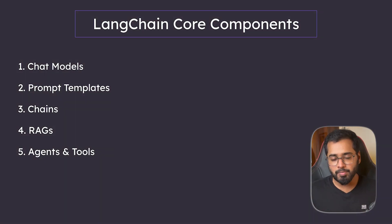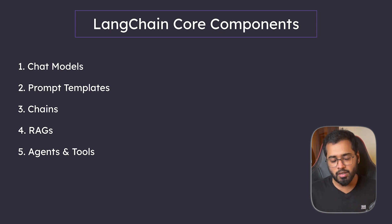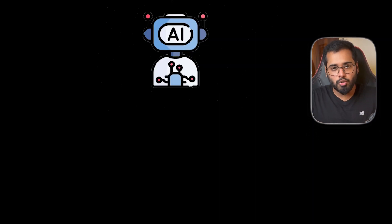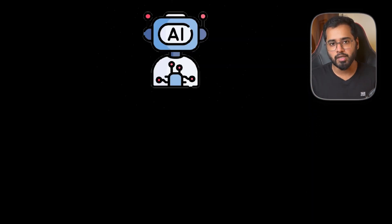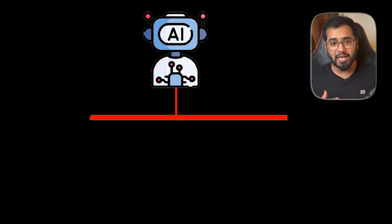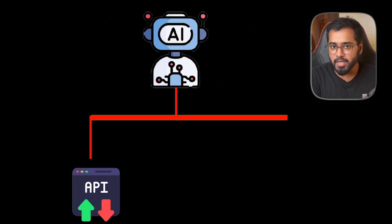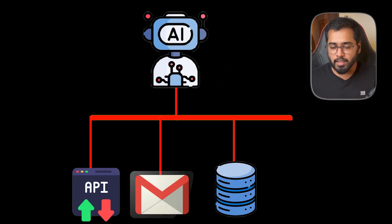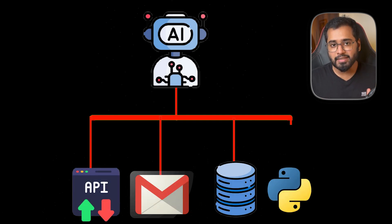Finally, we are going to wrap up this course with another critical component of LangChain, which is called agents and tools. Think of AI agents like a human agent who can see a problem and use various tools to solve that particular problem. It can interact with APIs, send emails automatically, scrape data from a website, run a Python script, or even query a database.